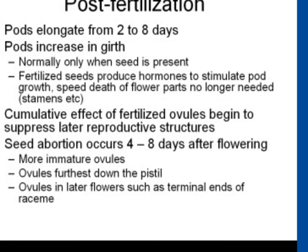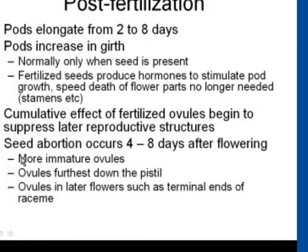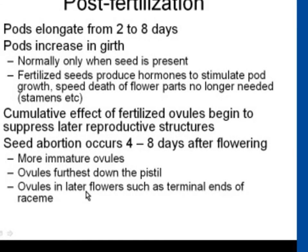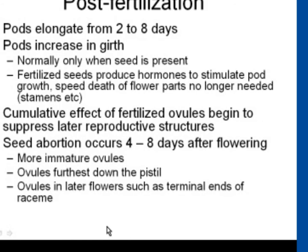That's why when you look at the canola raceme with all the pods, you get smaller and smaller pods and less and less seeds as you go up. If you get some kind of stress where you don't have good flower fertilization and pod set for the first half of the raceme, and then conditions change, you'll notice large pods again — because they haven't been suppressed. Even after flowers have been fertilized and pods are growing, seeds can still abort roughly eight days after flowering. There's a pecking order: the more immature ovules are the first ones pushed out, often the ones furthest down the pistil. So sometimes you'll see blanks in the very bottom of a pod — those were the most immature ovules.